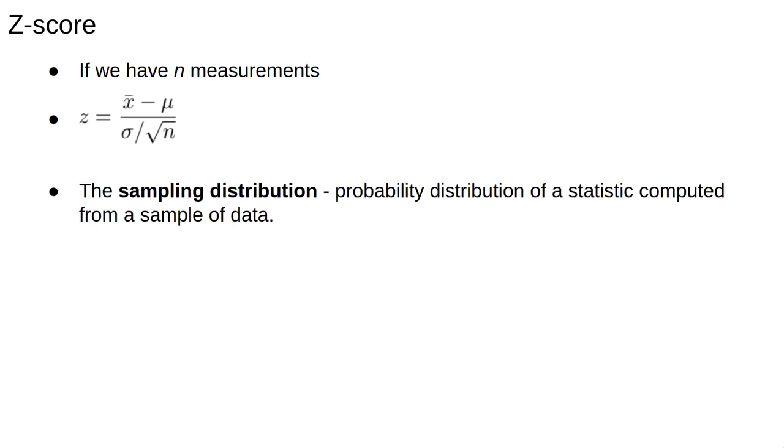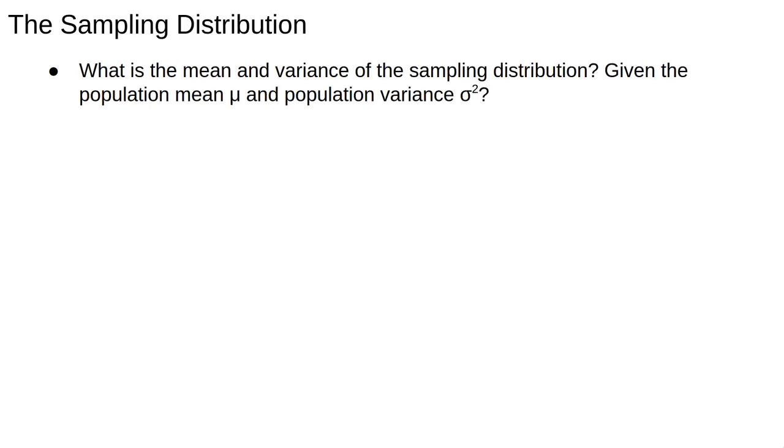To understand why we divide by the root of n, we introduce the idea of a sampling distribution. Say we measured the heights of 10 people. You wouldn't expect the mean to exactly equal the population mean. If we measured multiple groups of 10 people and bin the results, we would be approximating a different statistical distribution called the sampling distribution. We want to know the mean and variance of the sampling distribution.